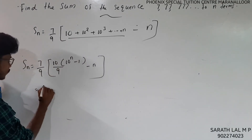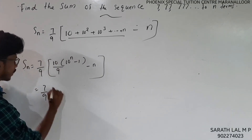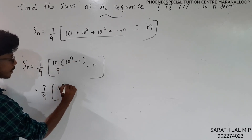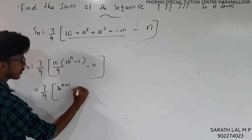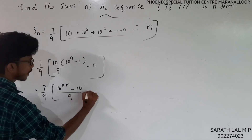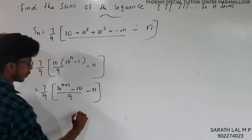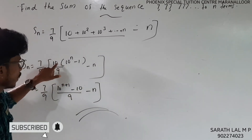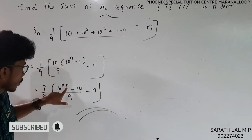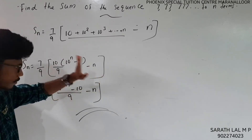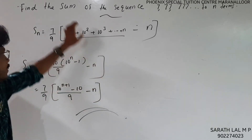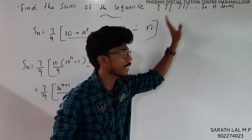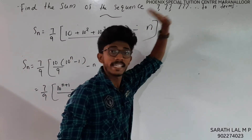So the final answer is 7 by 9 into 10 raised to n plus 1, minus 10 by 9, minus n. Simplifying: that is 7 times 10 raised to n plus 1, divided by 9, minus 10 divided by 9, minus n. This is the sum of the series 7 plus 77 plus 777, up to n terms.